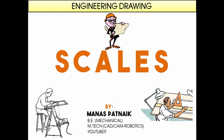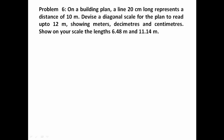Hi there guys, this is your friend and tutor Manas, and we'll be continuing with our discussion on diagonal scales. Here's the problem: on a building plan, a line 20 centimeters long represents a distance of 10 meters. Devise a diagonal scale for the plan to read up to 12 meters, showing meters, decimeters, and centimeters. Show on your scale the lengths 6.48 meters and 11.14 meters.